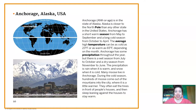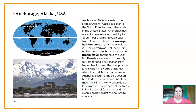Anchorage is in the state of Alaska. Alaska is closer to the North Pole than any other state in the United States. Anchorage has a short warm season from May to September and a long cold season from October to April. The average high temperature can be as cold as 23 degrees Fahrenheit or as warm as 65 degrees Fahrenheit depending on the month. Anchorage has some precipitation throughout the year, but there is a wet season from July to October and a dry season from November to June. The precipitation is rain when it is warm and snow when it is cold. Many moose live in Anchorage. During the cold season, hundreds of moose come out of the mountains into the city where it is a little warmer. They often eat the trees in front of people's houses and then sleep leaning against the houses to stay warm. I didn't know that about moose! I've never seen a moose in real life, but that was not our purpose for reading.